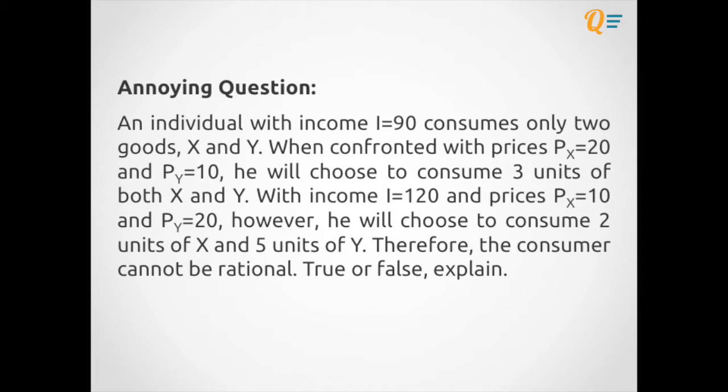Now with an income of 120 and the prices are now 10 and 20 for both goods, however, he would choose to consume 2 units of X and 5 units of Y. Therefore, the consumer cannot be rational. So we have to prove whether this is true or false and explain why that's the case.